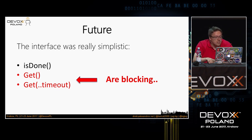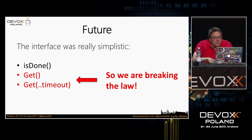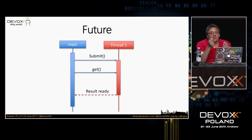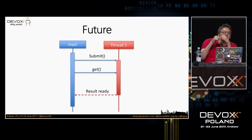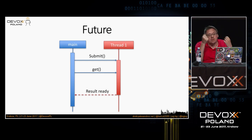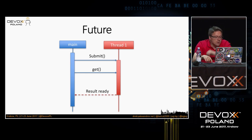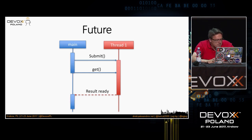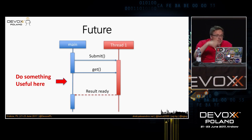By using the get() function, we are actually breaking the law. If we take a look at this diagram, there is a main thread and a different thread where we submit work. We submit the work and we can continue our work in our thread while the work is offloaded asynchronously. But of course we usually do the get() operation. As we do get(), the main thread blocks, and we are waiting for thread one to finish its work — all that time we're doing nothing. What we want is to do something useful in the main thread in the meantime.